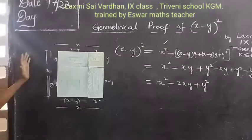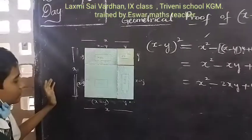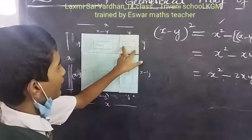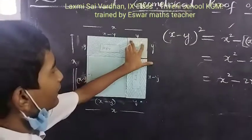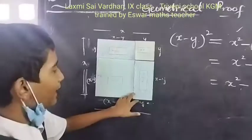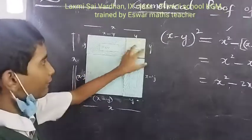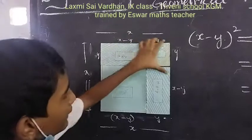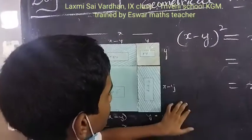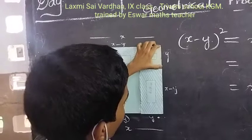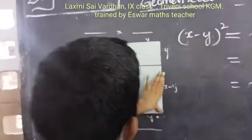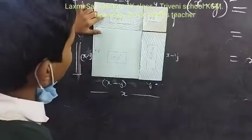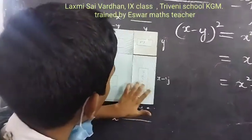First, take a square of side X and take the length of Y. I am making it into three parts. Take Y and we get here X minus Y, and this is the side of X because it is a square. So, it will be the Y and this will be the X minus Y. By seeing that, we can understand that this is the rectangle and this is also the rectangle.